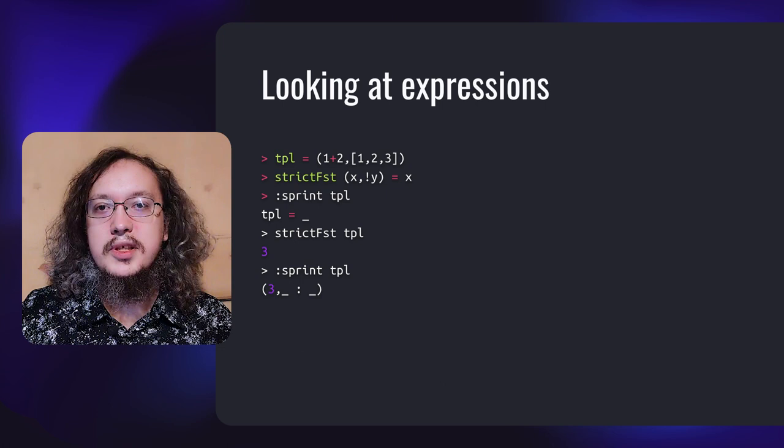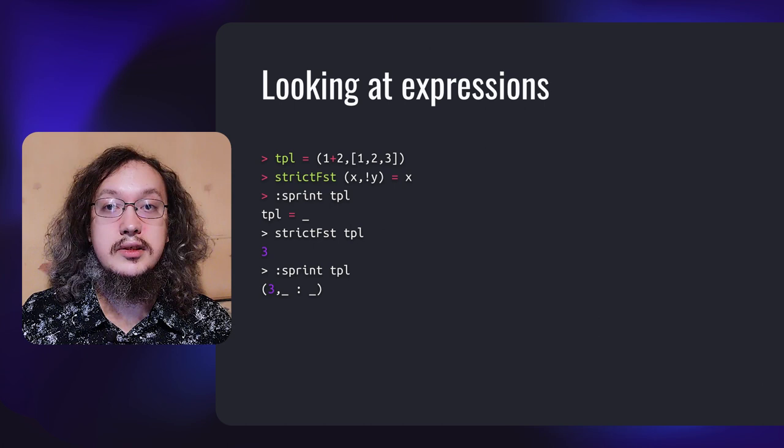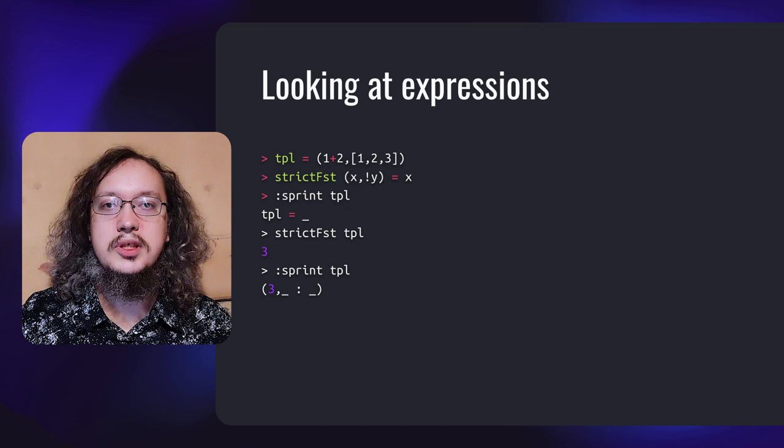In a more complex example, we define a tuple and use our strictFST function. Let's apply it to the tuple. After printing the result with the sprint command, we see that the first element has been fully evaluated because it was necessary for printing, and the second argument is also evaluated but only up to the weak head normal form because of the bang pattern.